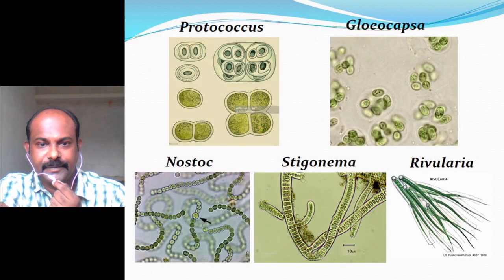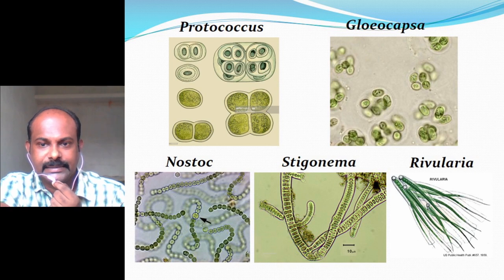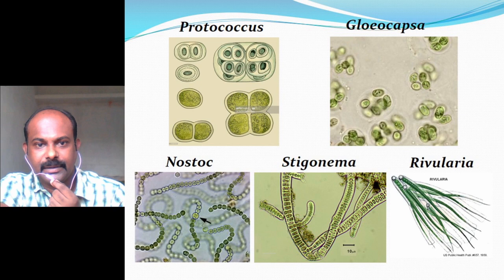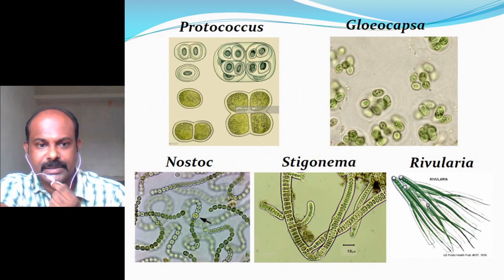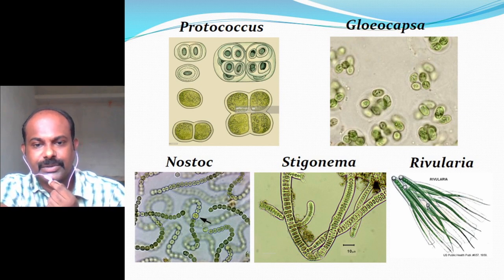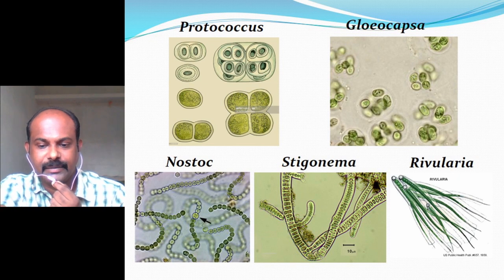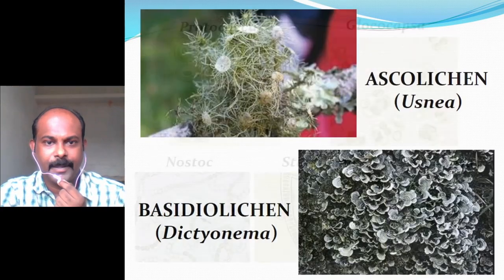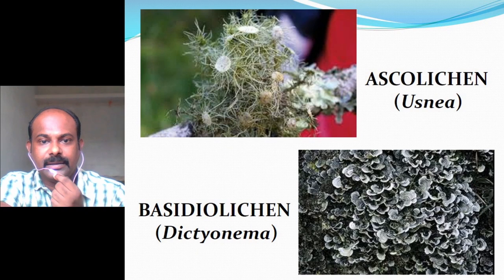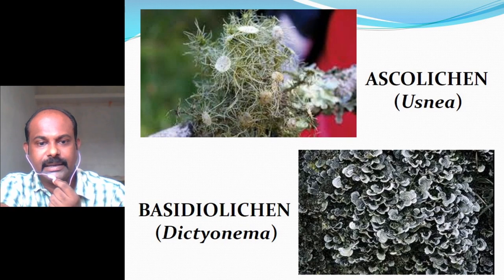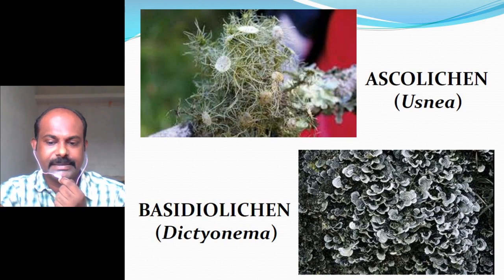These are figures showing the various green algae and cyanobacteria which can get into association with the fungus to form the lichen thallus: Protococcus, Gloeocapsa, Nostoc, Stigonema, and Rivularia. Also shown are figures of Ascolichens and Basidiolichens — Usnea is an Ascolichen and Dieteria nema is a Basidiolichen.